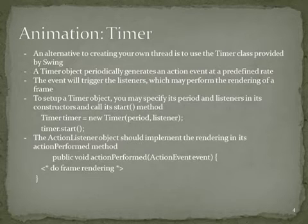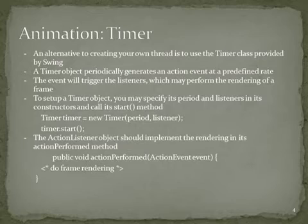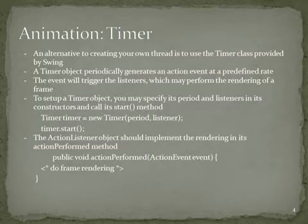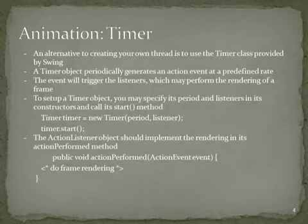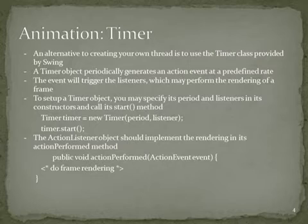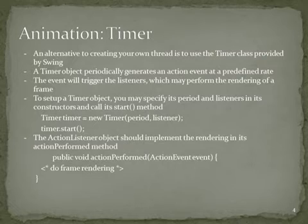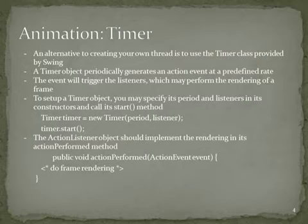An alternative way to create animation is to use the Timer class provided by Swing. A Timer object periodically generates an action event at a predefined rate. The event triggers the listener, which may perform the rendering of a frame. To set up a Timer object, we specify its period and listeners in its constructor and call its start method: Timer timer = new Timer(period, listener); timer.start(). The ActionListener object should implement the rendering in its actionPerformed method.